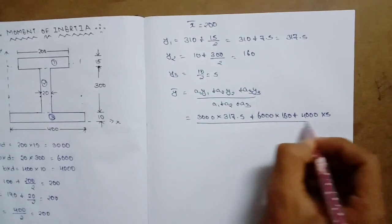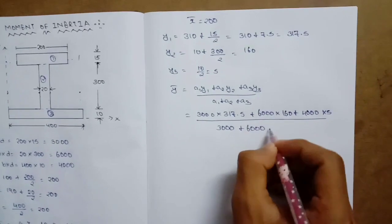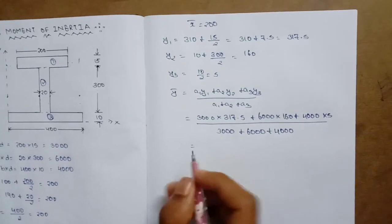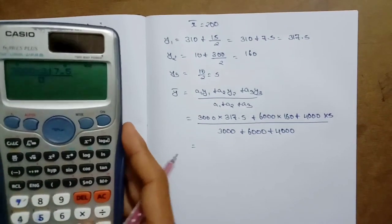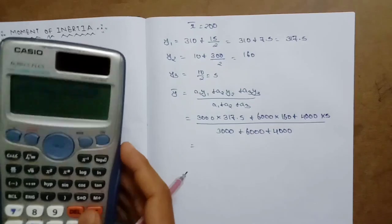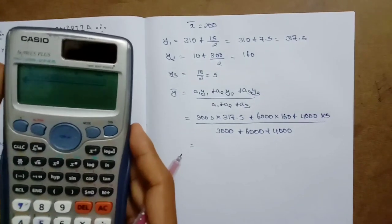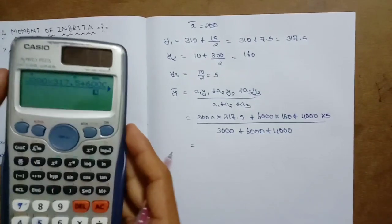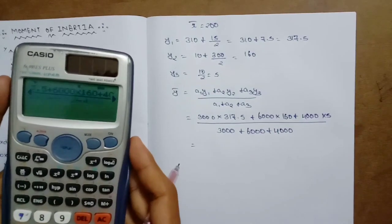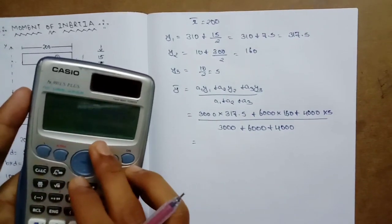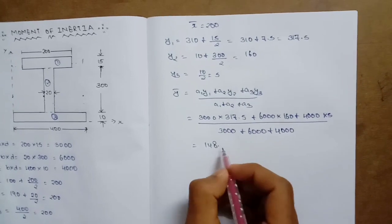Y-bar = (A1·Y1 + A2·Y2 + A3·Y3) / (A1 + A2 + A3) = (3000×317.5 + 6000×160 + 4000×5) / (3000 + 6000 + 4000). The result is Y-bar equal to 148.65.